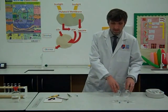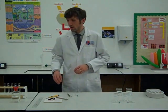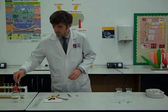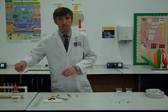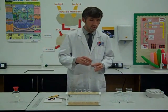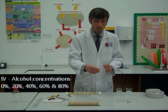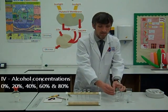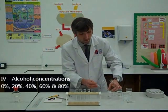The first one we're going to look at is how to make the alcohol concentrations up. Easy ones are just like 100% and 0% alcohol, so 0% is literally just water, distilled water. We're going to use 5cm cubed of distilled water.